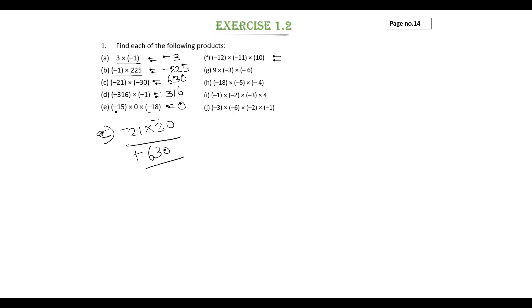f subdivision: minus 12 into minus 11 into 10. First multiply the whole numbers, 12 into 11. Result is 132. Two negatives give positive, so plus 132 into 10 gives 1320.